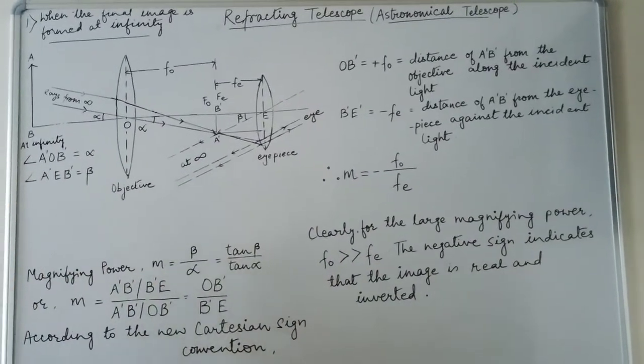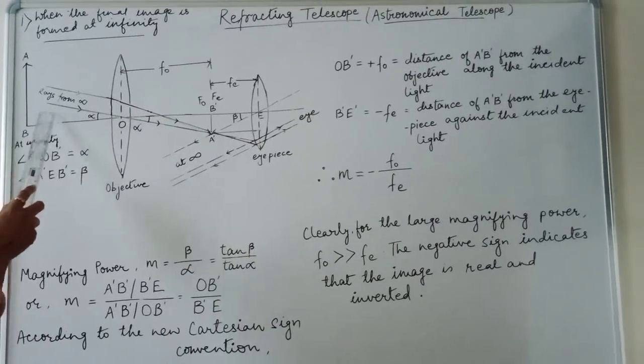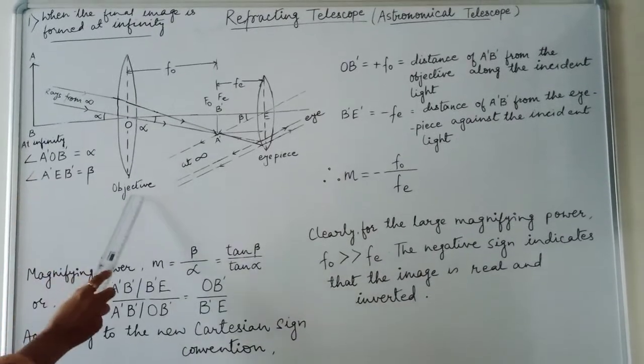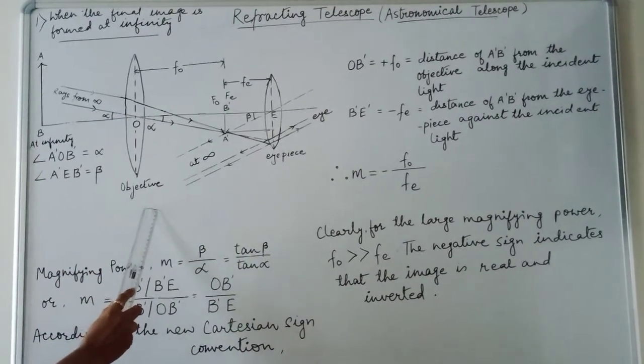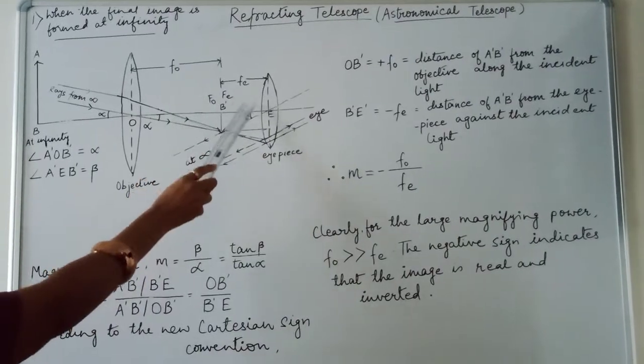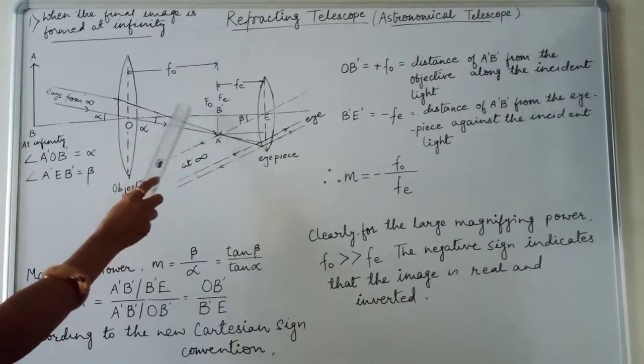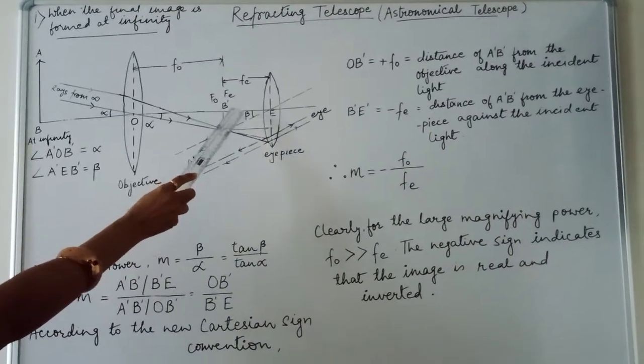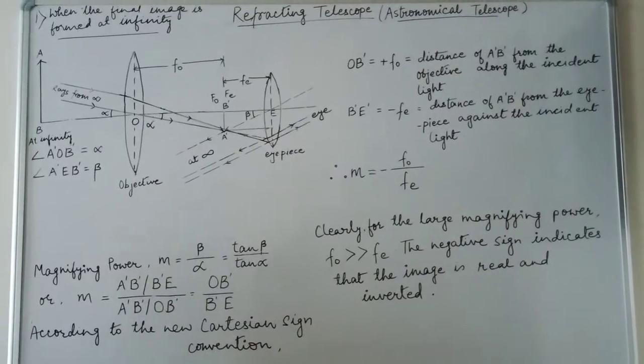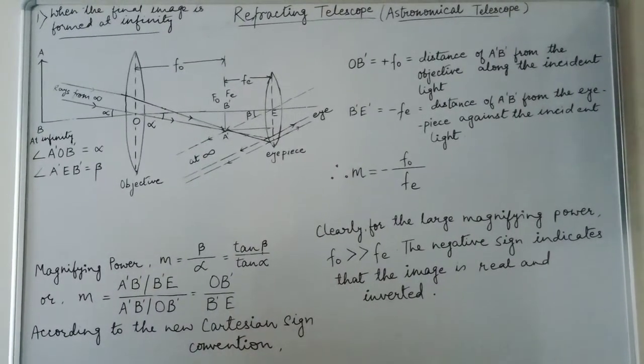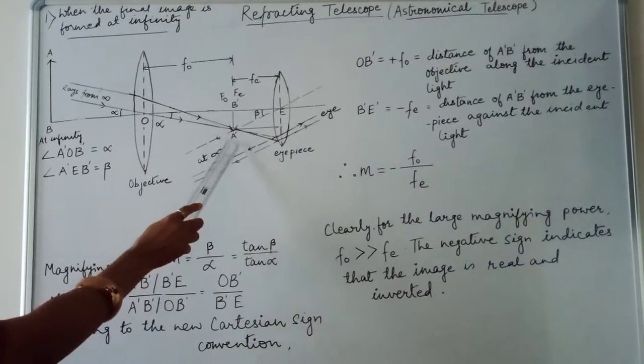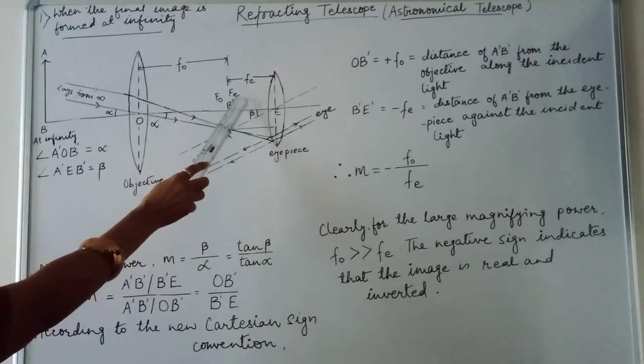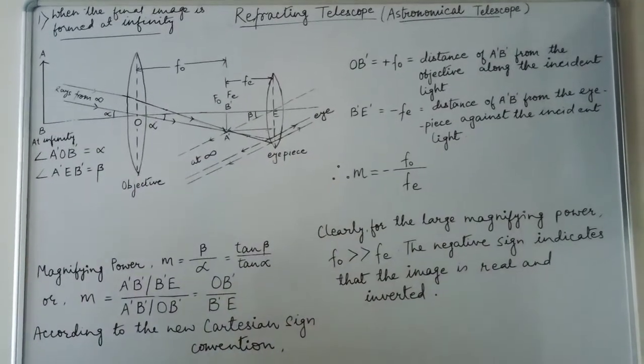Now, when a parallel beam of light incident on the objective, it forms a real inverted and diminished image A dash B dash in its focal plane. The eyepiece is so adjusted that the image A dash B dash exactly lies at its focus, FE. Therefore,